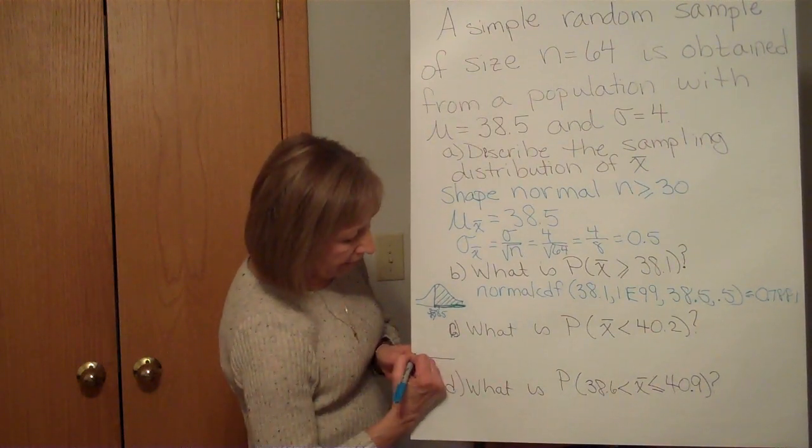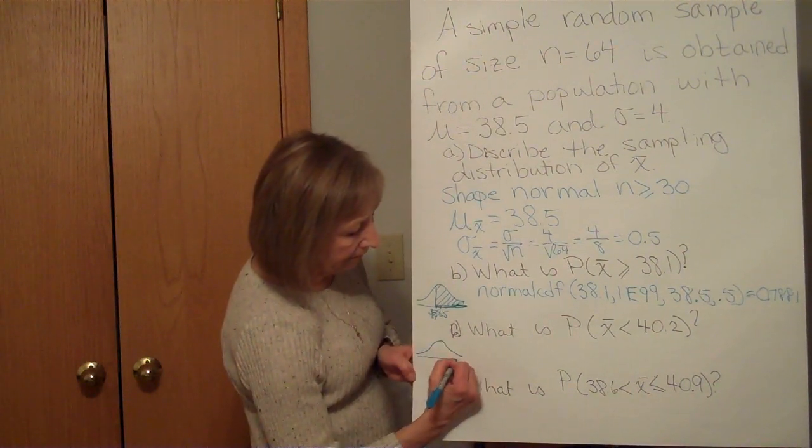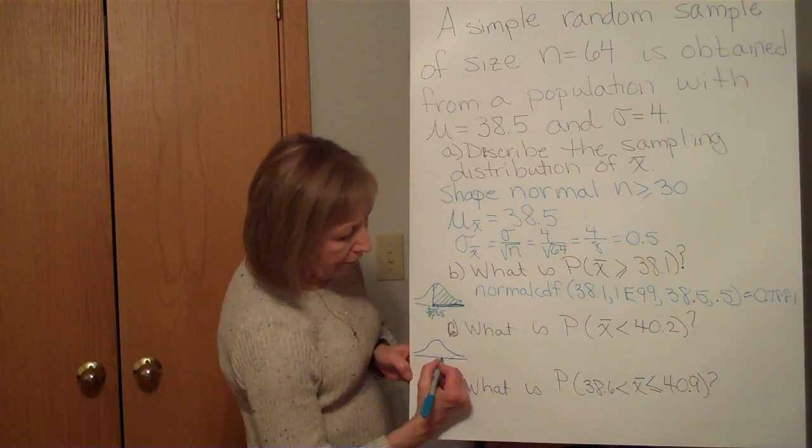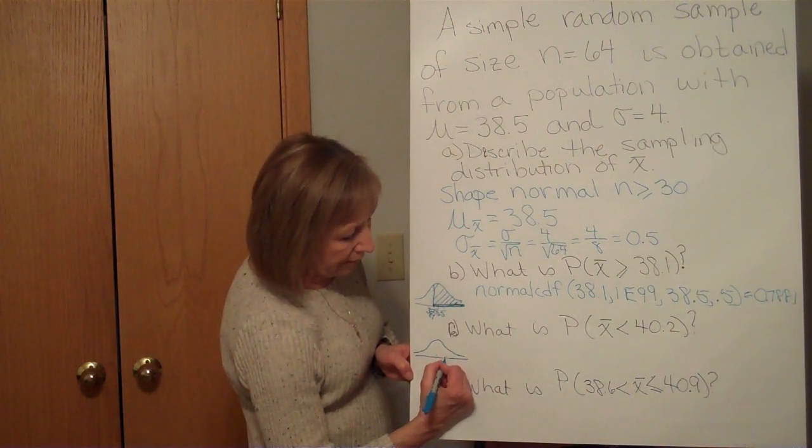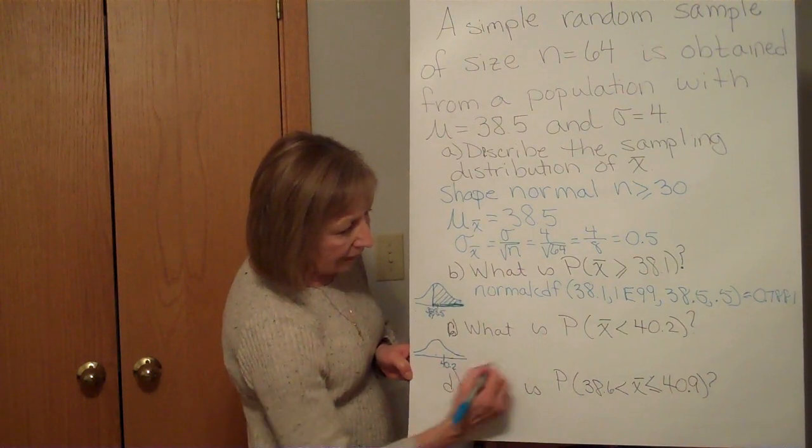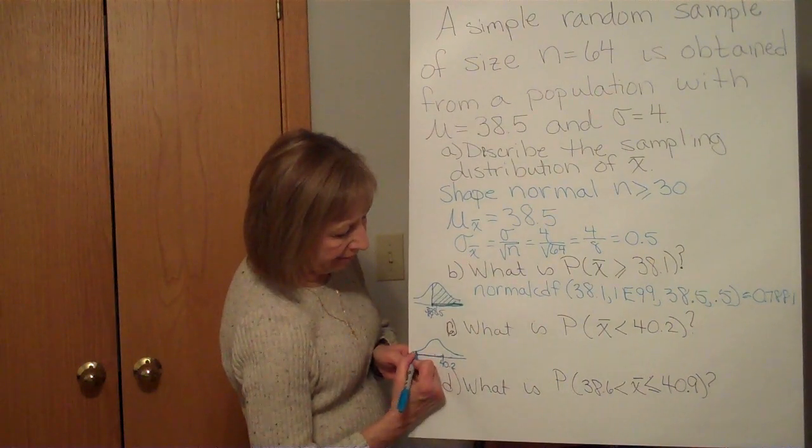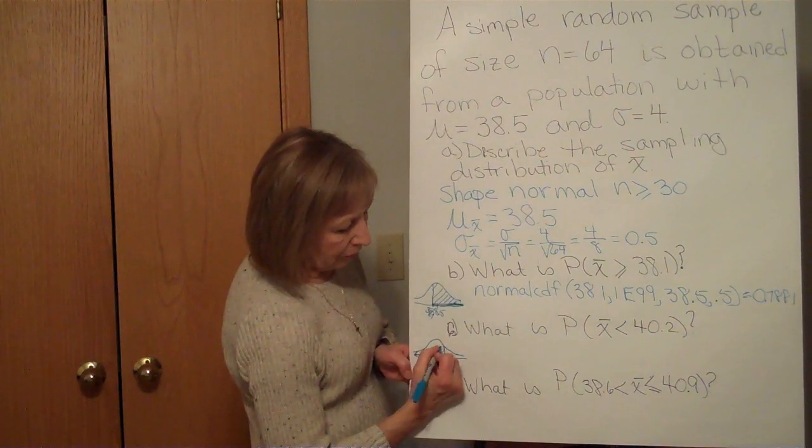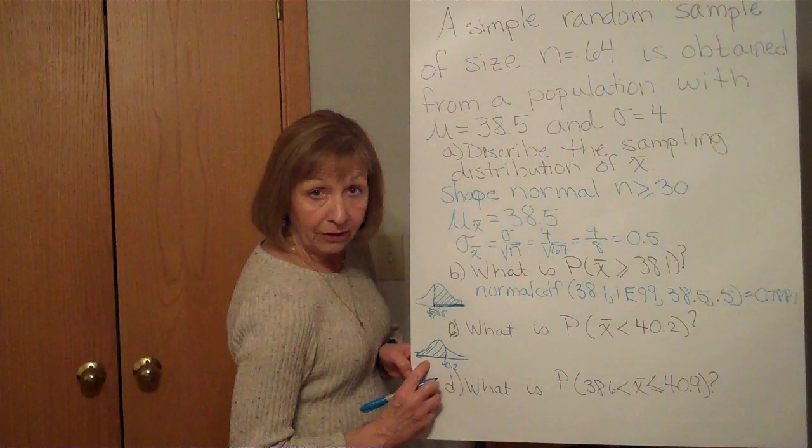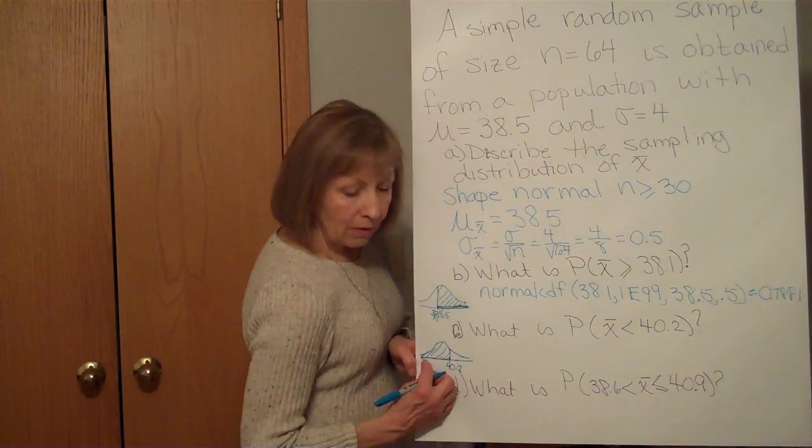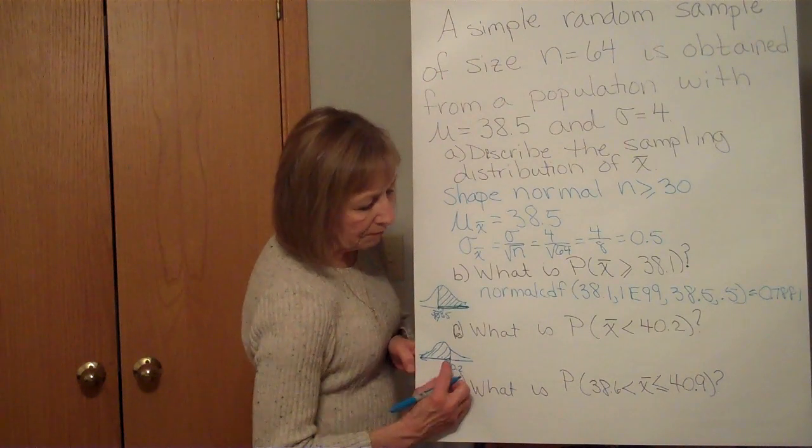So here again we have our normal distribution. The 38.5 is here, 40.2 is a little bit to the right of that, and I want less than the 40.2, so to the left. So we're looking at that area, so forever left is my low up to the 40.2 is my high.